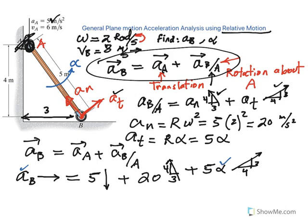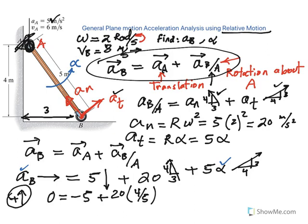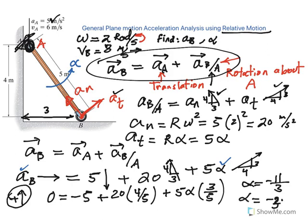Equating vertical components (taking upward as positive): the left side gives 0 (acceleration of B is horizontal). On the right: minus 5 from acceleration of A, plus 20 times 4/5 from the normal component, plus 5·alpha times 3/5 from the tangential component. Solving gives alpha equals minus 11/3, which is minus 3.67 rad/s². The negative sign means our assumed direction for alpha is wrong — alpha is actually 3.67 rad/s² clockwise, meaning the bar is decelerating.